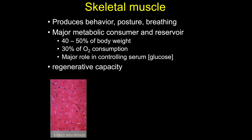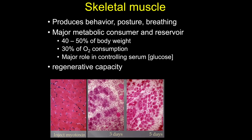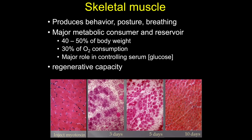In part due to these functions, skeletal muscle has some regenerative capacity. For example, if we inject myotoxin, by about five days these injected dead cells will begin to regenerate, and by 10 days muscle cells have fully regenerated — with the caveat that this regeneration does not always reflect the original organization, and that this capacity actually decreases with age.